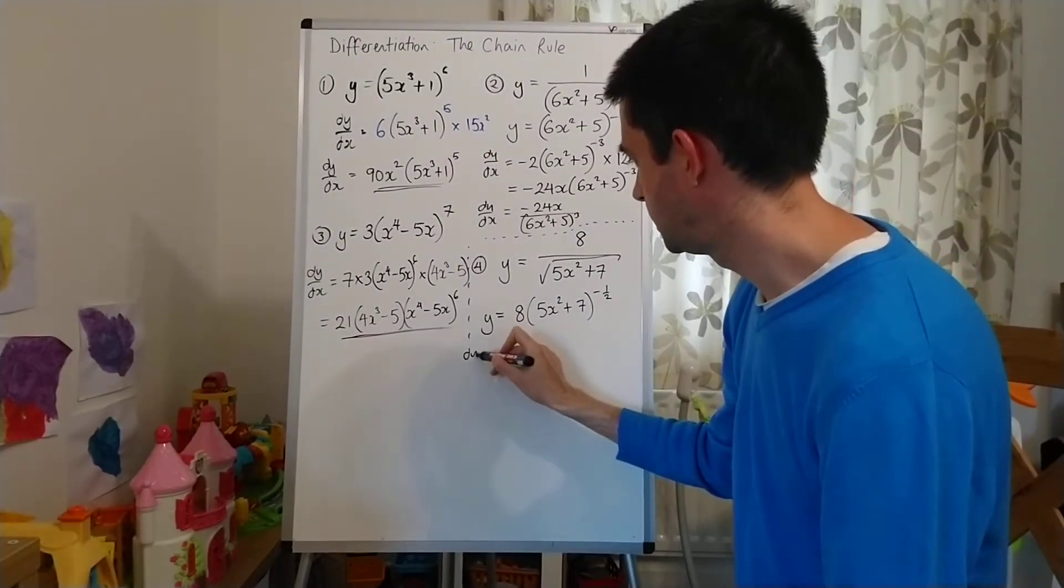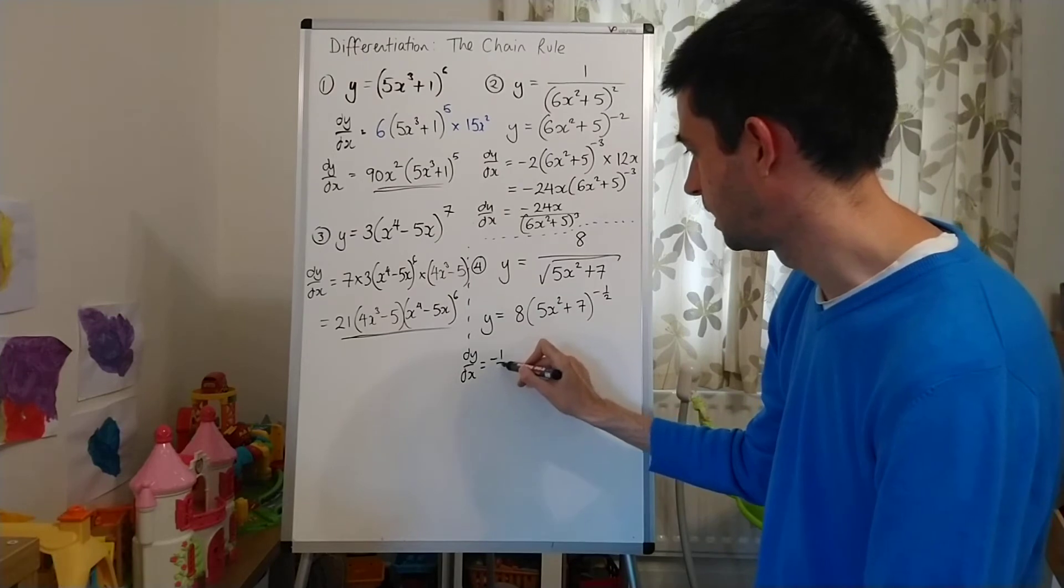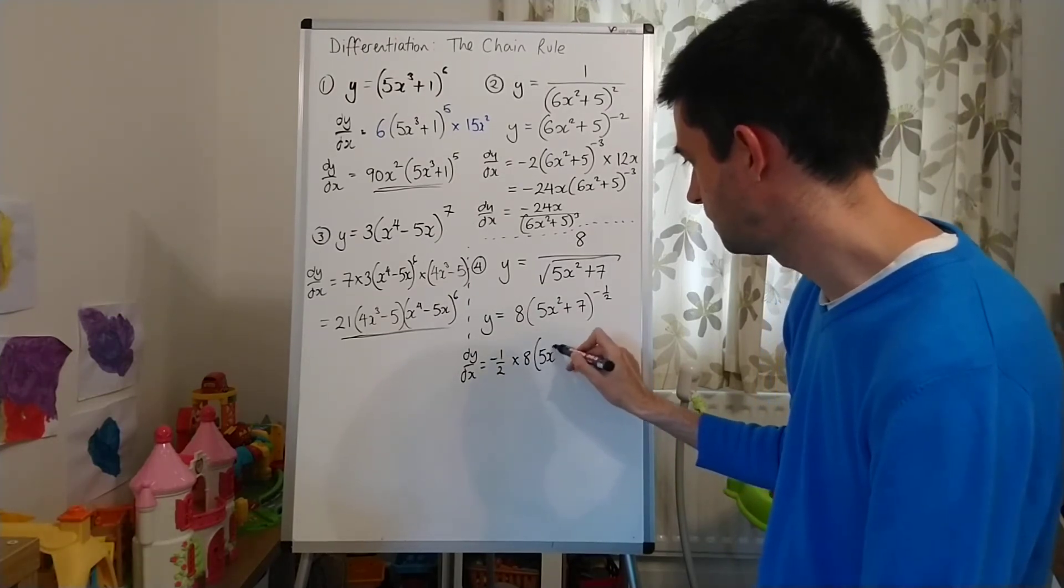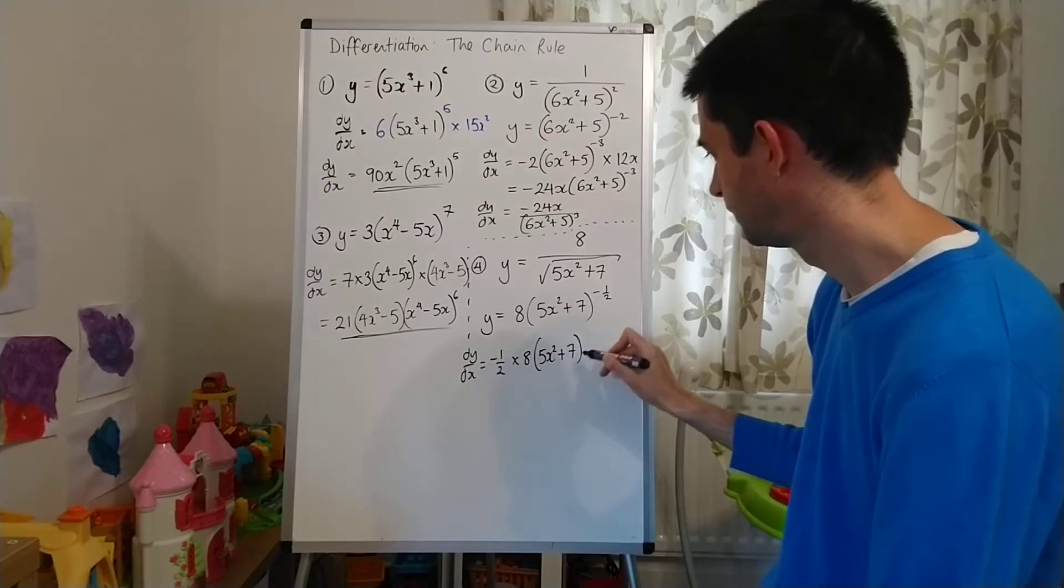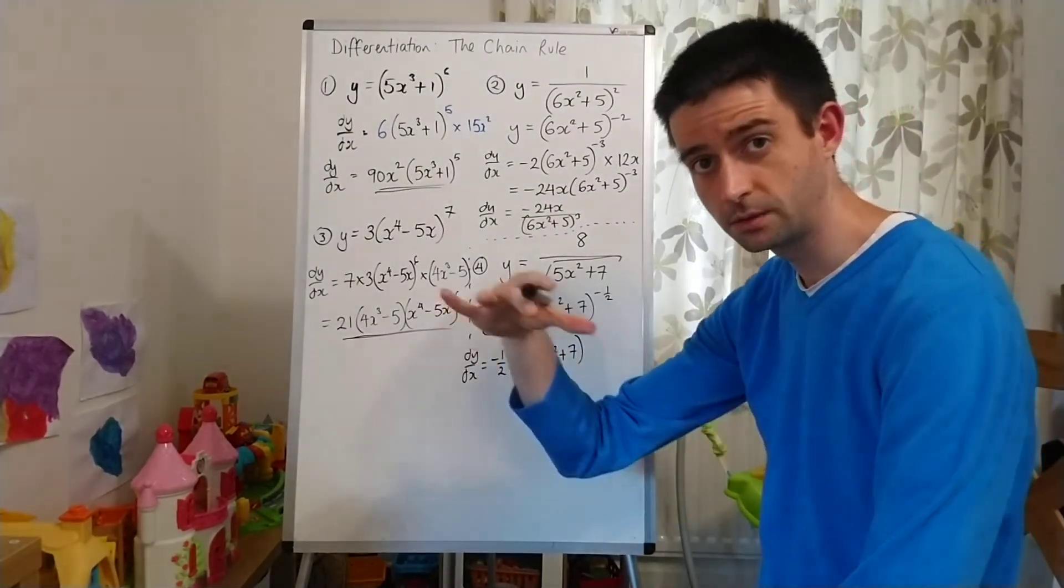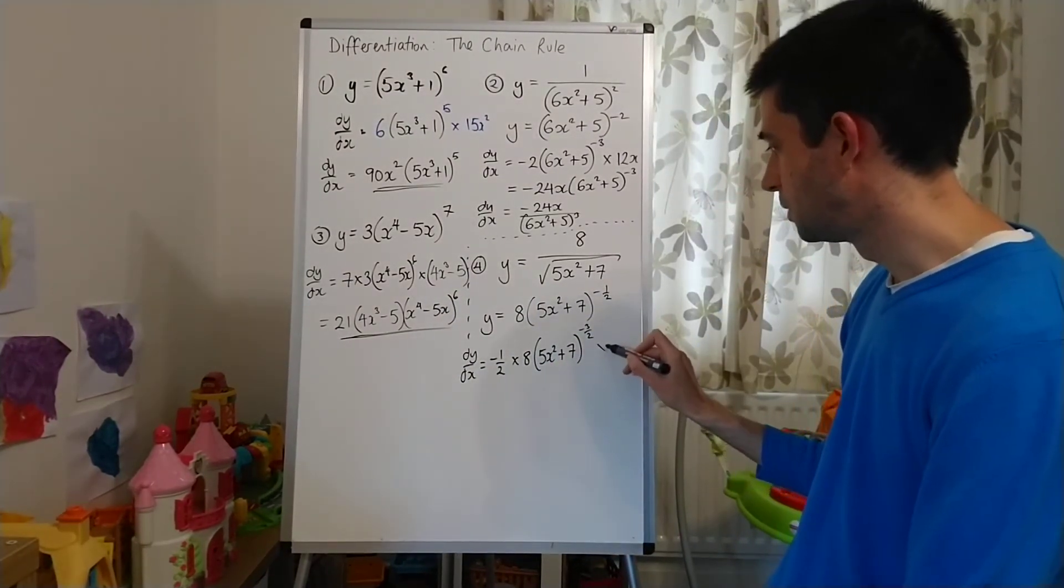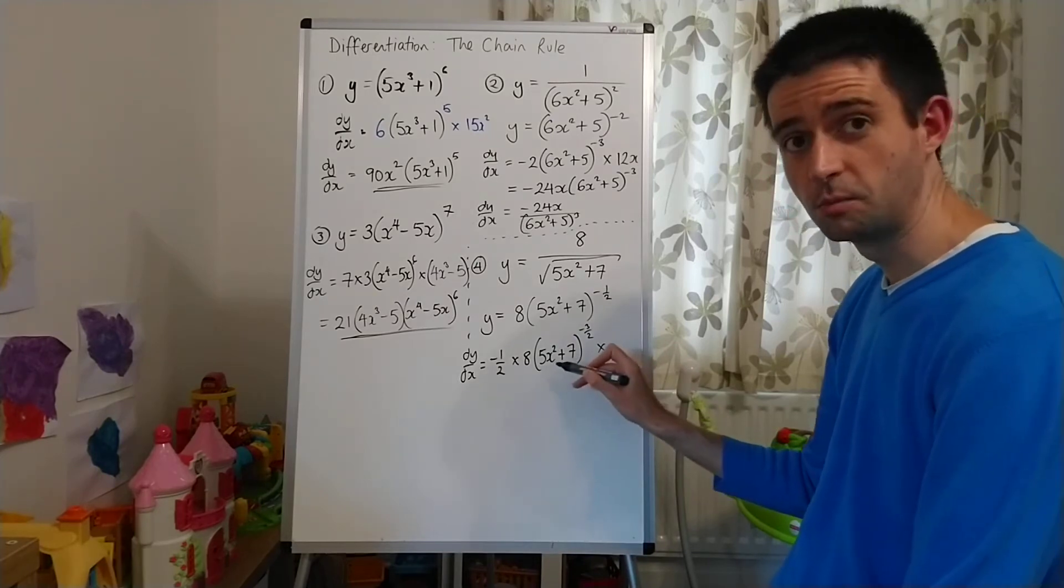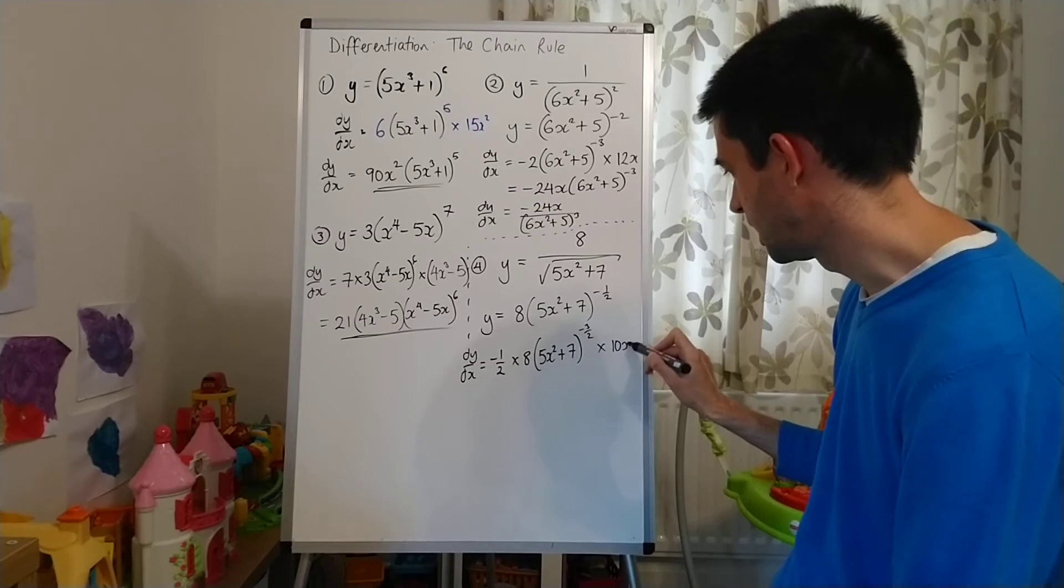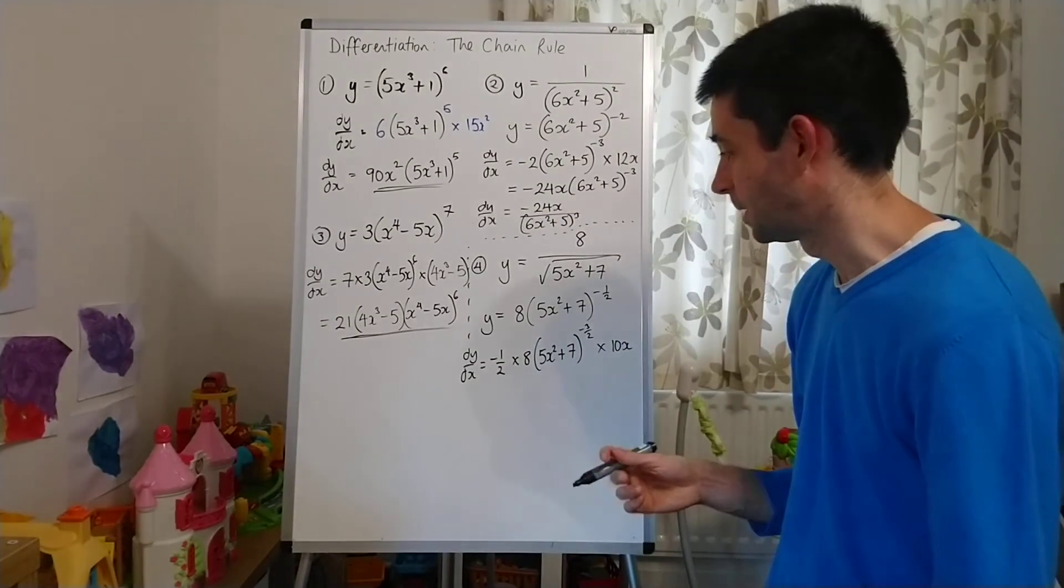So when we differentiate this, again, we bring the power down. So -1/2 times by 8. The bracket stays the same. 5x² plus 7. Reduce the power by 1. Take your time. -1/2 down by 1 is -3/2. And then multiply by the differentiated bracket. 5x²+7 differentiates to 10x.